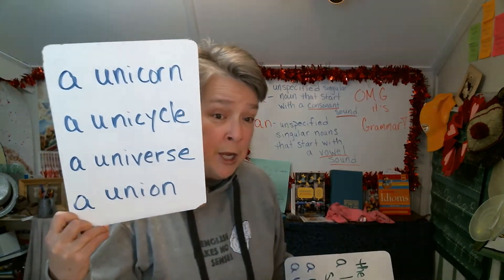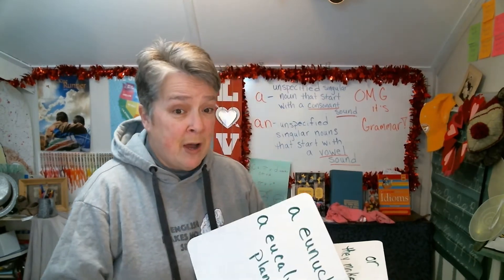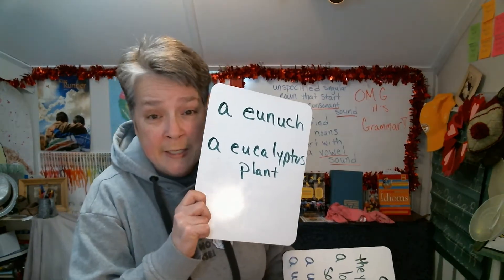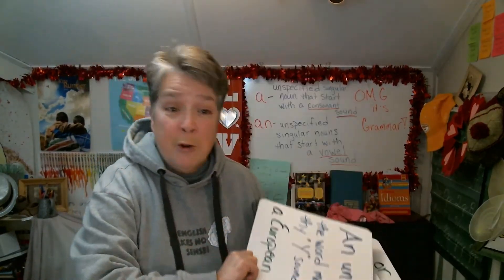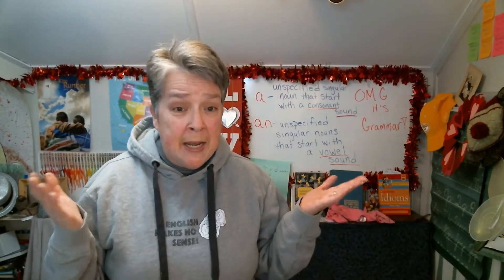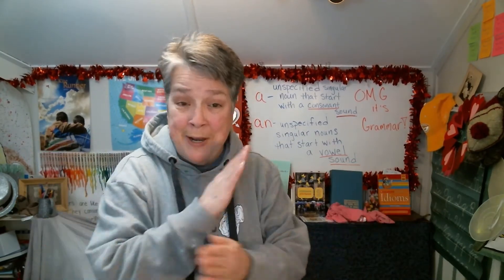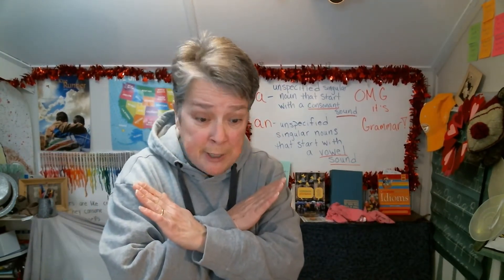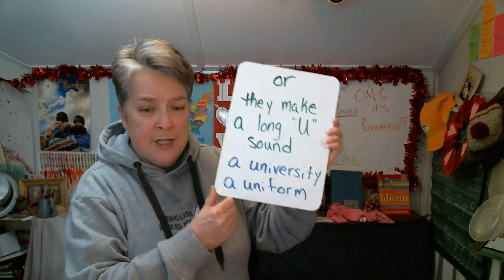If it makes the long U sound, we use 'a.' If it has a vowel and makes the Y sound — like a eunuch, a eucalyptus, a European — we don't use 'an.' But we do use 'an' for: an egg, an igloo, an apple, an orange. But not if it makes the long U sound. The only words I could think of with long U: a university, a uniform, a unicorn.